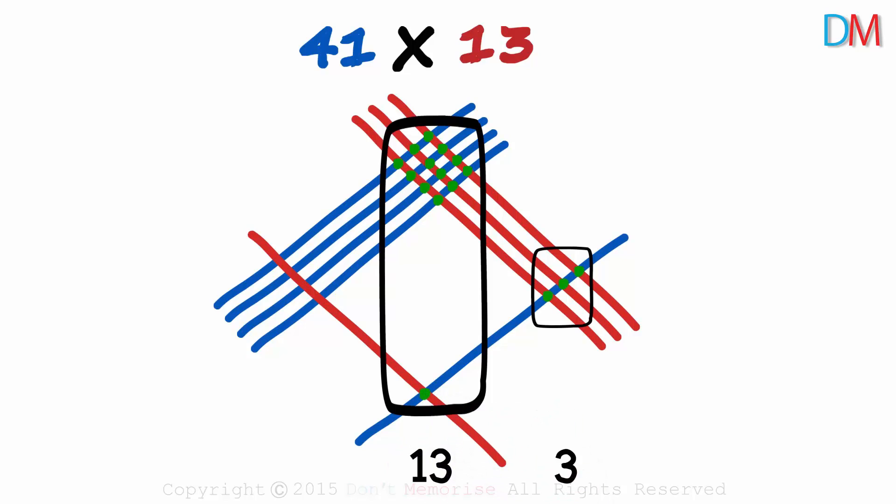But wait, what do we do when we get two digits under a zone? We simply carry the tenth digit over to the column on the left. Yes, that's all.